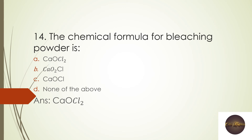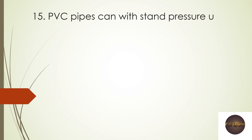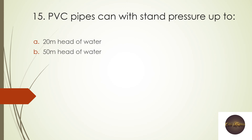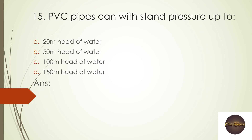Next question: PVC pipe can withstand pressure up to — 20 meters head, 50 meters head, or 100 meters head? Polyvinyl chloride (PVC) pipes can withstand pressure up to 100 meters head of water.